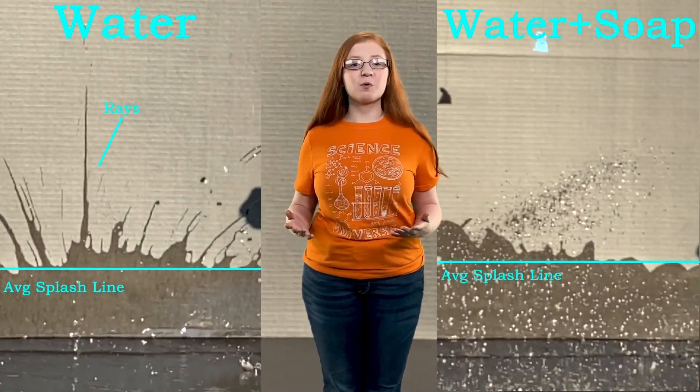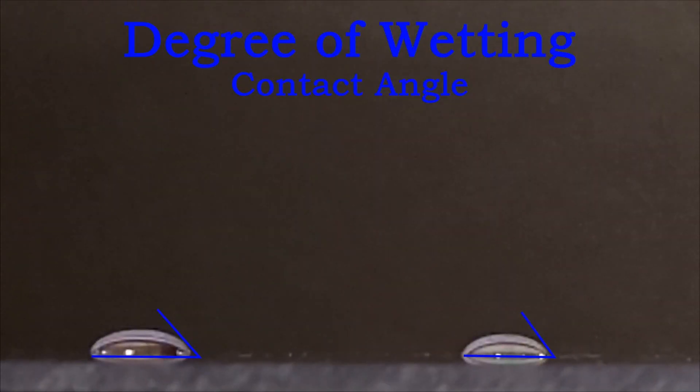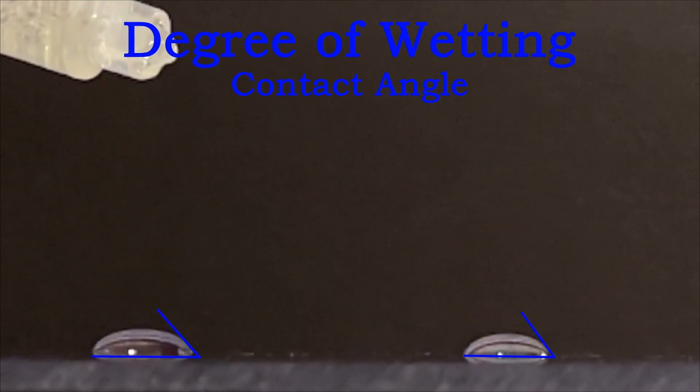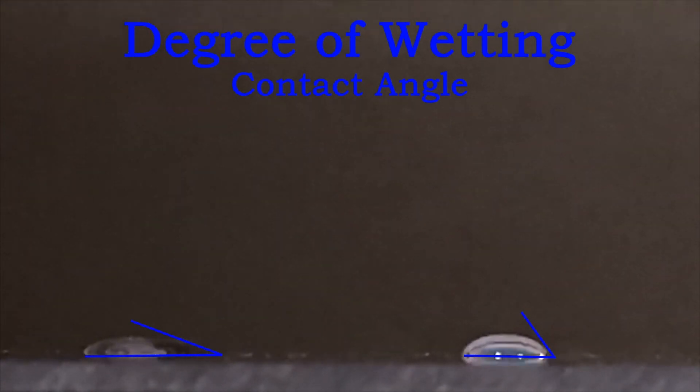When the surface tension is broken, it's called wetting. It's actually making the water wetter. To measure this, you use the measurement degree of wetting. To find this, you measure the contact angle between the droplet and the solid surface. The smaller the contact angle, the smaller the surface tension, the greater the degree of wetting.